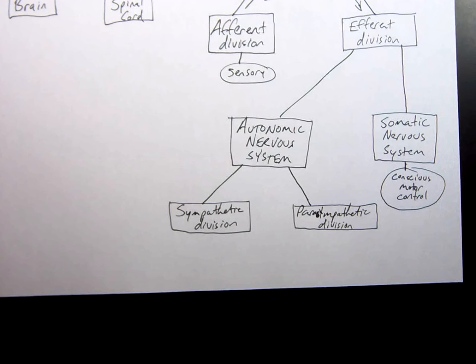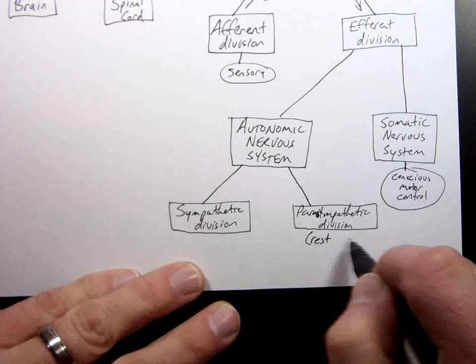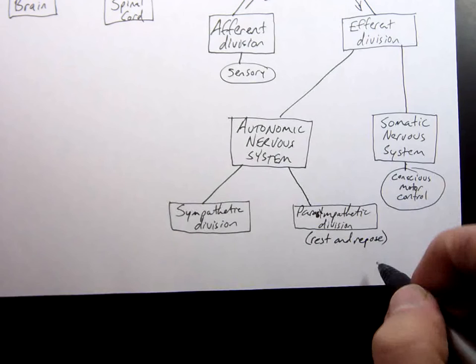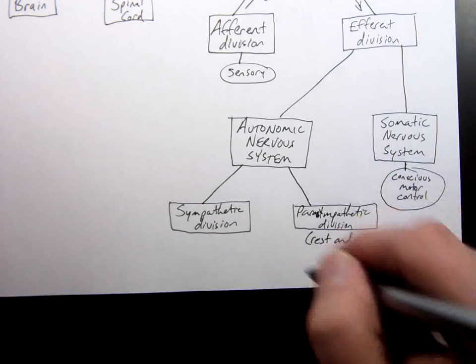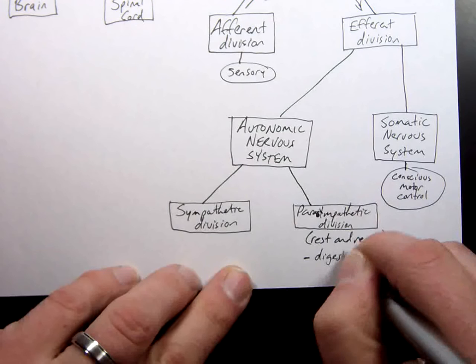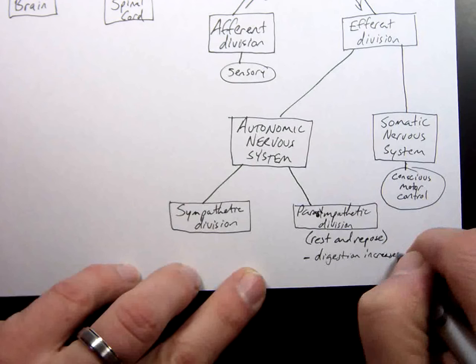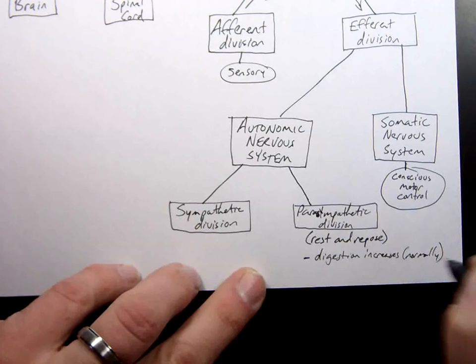Parasympathetic because this is rest and repose. This is chilling this is normal this is healthy this is where your blood pressure is in a normal healthy range and of all the things here that are important digestion increases normally.